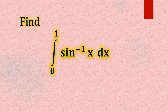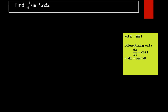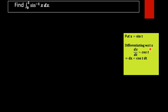Find the integral from 0 to 1 of sin inverse x dx. To evaluate this, we take x equal to sin t in order to make this function into an integrable form. Differentiating with respect to x, we get dx/dt equal to cos t, which implies dx equal to cos t dt.